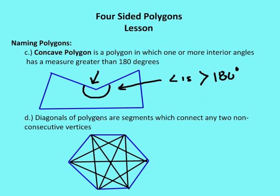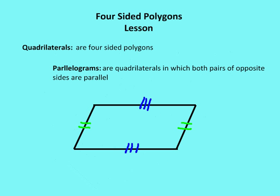A diagonal of a polygon is a segment which connects any two non-consecutive vertices. So if I have vertices A and B that are consecutive, a diagonal will not connect A and B. But a diagonal will connect non-consecutive vertices such as B and D or B and E. We'll also talk about counting the number of diagonals in polygons.